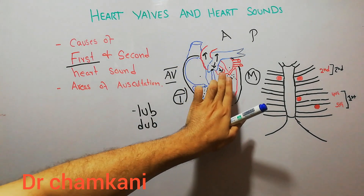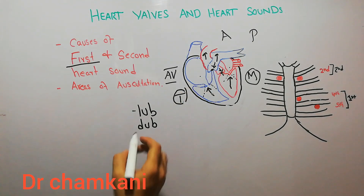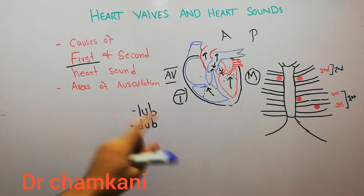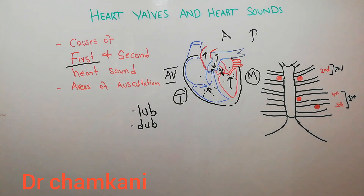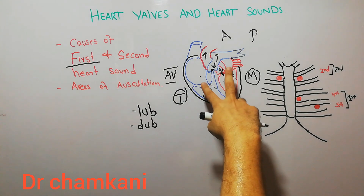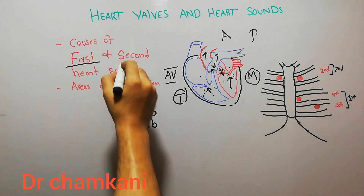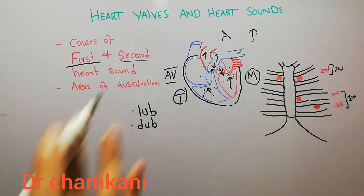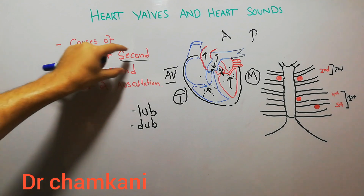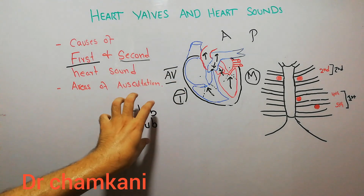With the closure of the pulmonary valve and the aortic valve, another sound is generated which is the 'dup' sound — the second heart sound. So the heart sounds are like lub-dup, lub-dup. The 'lub' sound is the first heart sound due to closure of the mitral and tricuspid valves, and the second heart sound is due to closure of the aortic and pulmonary valves. This is how the first and second heart sounds are generated.